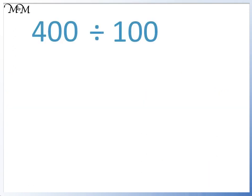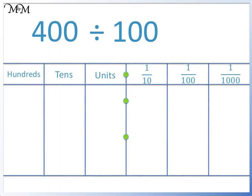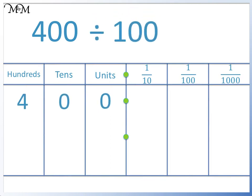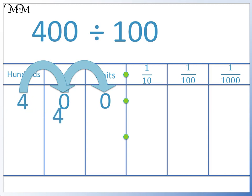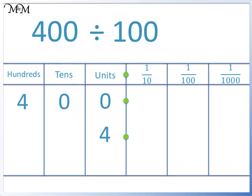For example, 400 divided by 100. We can place the digits of 400 on a place value grid to see what's happening. To divide by 100, we move each digit two places to the right. Starting with 4: 1, 2. We have moved the 4 from the hundreds column to the units column.